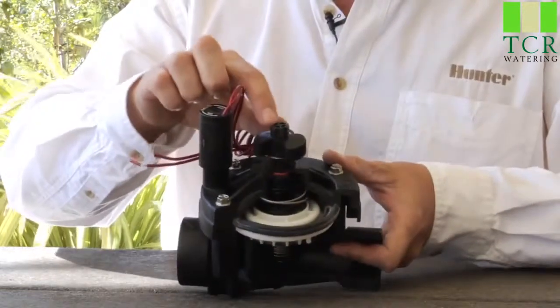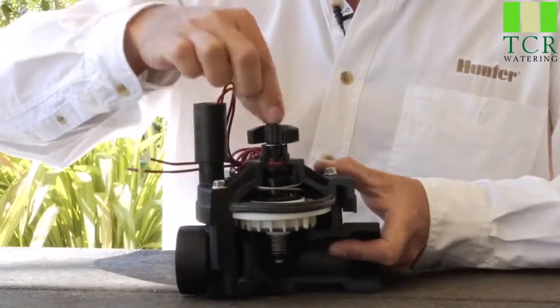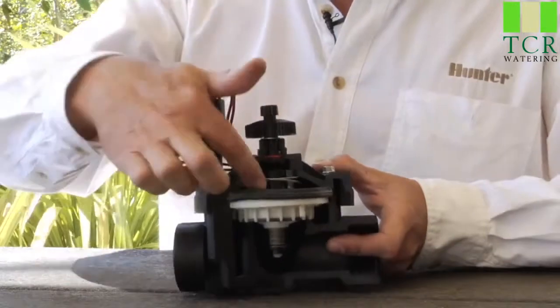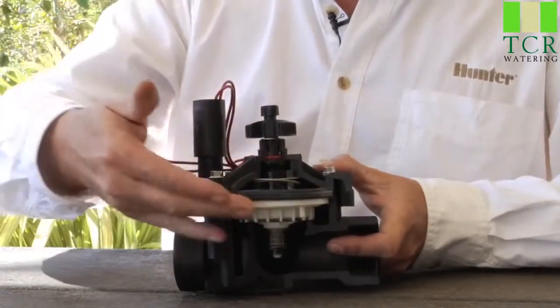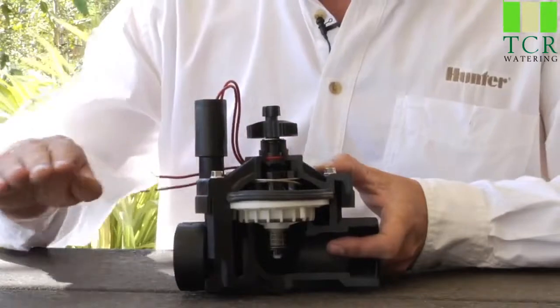On top of the flow control screw, we have what's called the manual bleeder screw, and opening the manual bleeder screw allows the water to evacuate out through that hole, and it allows the diaphragm to open, thus the valve will open with it.